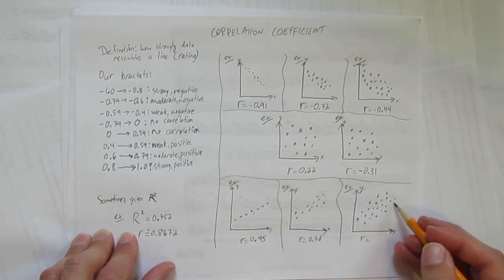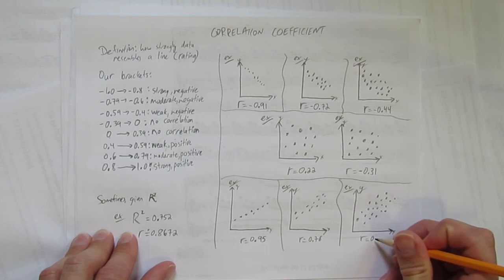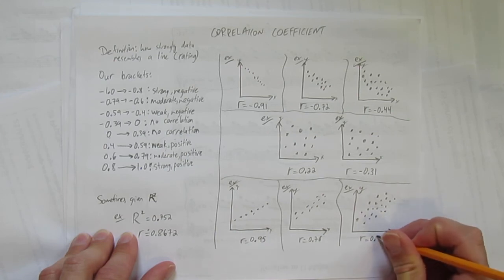And finally this one going up to the right clearly but very loose, very weak. That's a weak positive. I'll give that a zero point four eight.